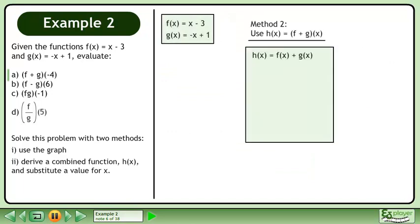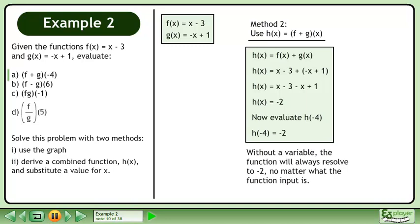Now solve the problem algebraically by finding a function h that is the sum of functions f and g. Replace f with x minus 3 and replace g with negative x plus 1. Distribute positive 1 through the brackets and collect like terms. The x terms subtract out, leaving the constant negative 2. The resulting function is h equals negative 2. Now evaluate h at negative 4; the result is negative 2. Without a variable, the function will always resolve to negative 2 no matter what the input is.